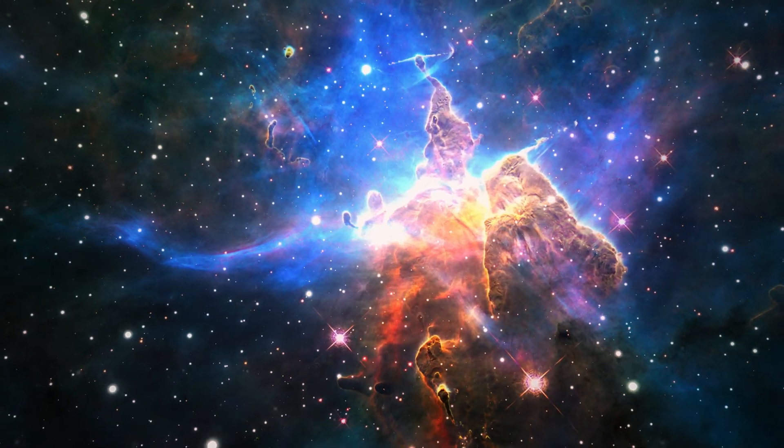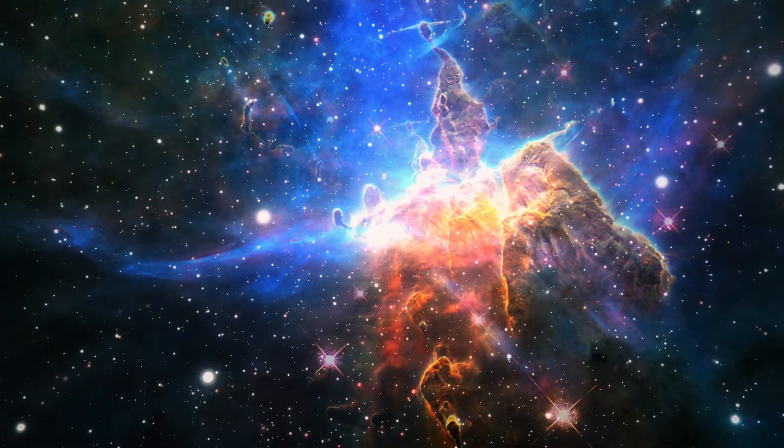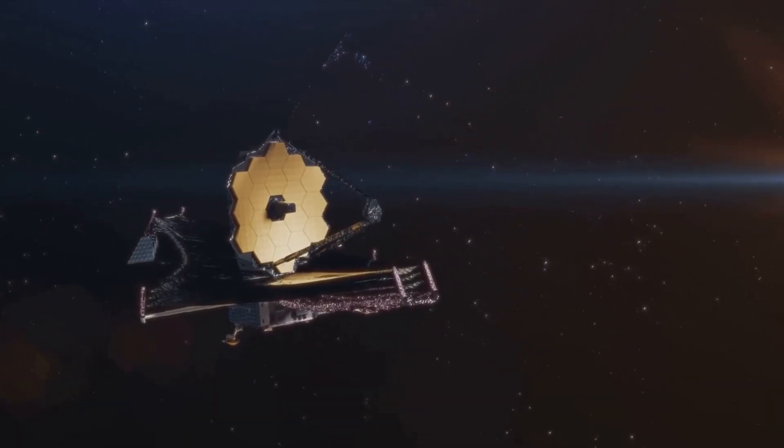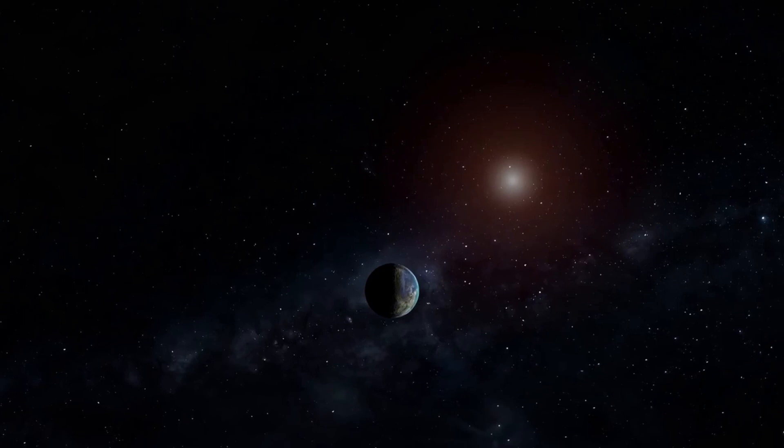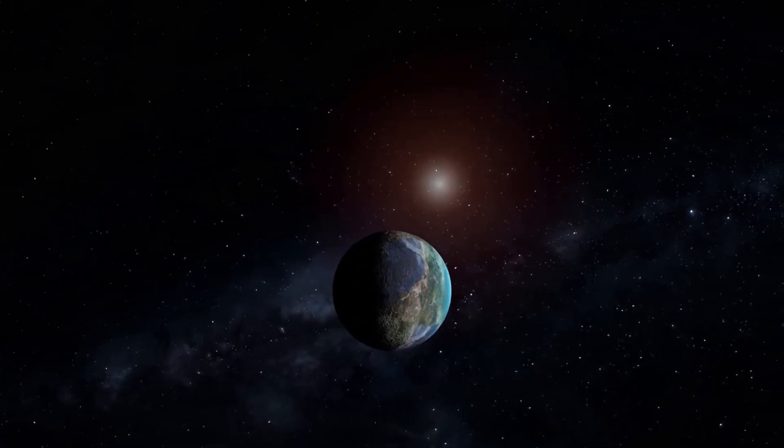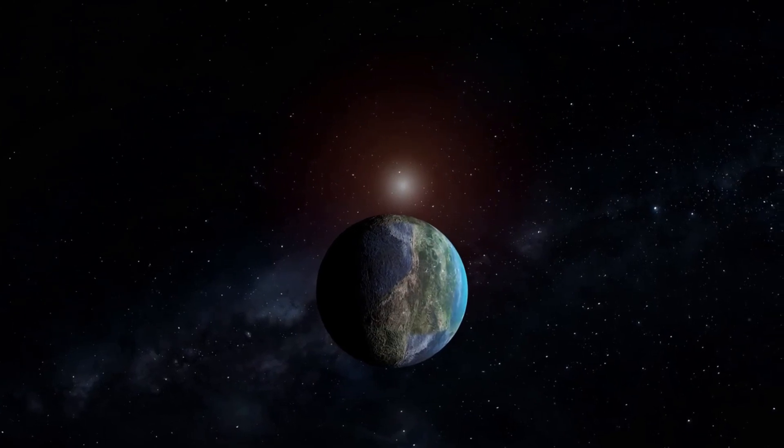With its launch, a new era of space exploration and discovery began. Within a year of its launch, Webb began revealing the universe's secrets. One of its first breakthroughs was the discovery of an Earth-sized exoplanet named LHS 475 b.